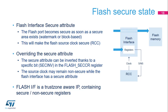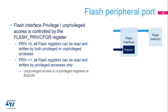The flash is secure when at least one secure area is defined, either by watermark-based option bytes or block-based security registers. This controls the source clock of the flash as secure. It is possible to override the flash security state using the SecInv bit in the FLASH_SECCR register. The flash interface is a TrustZone-aware IP containing both secure and non-secure registers. Flash registers can be read and written by privileged and unprivileged accesses depending on the PrivBit in FLASH_PRIVCFGR. When PrivBit is reset, all flash registers can be accessed by both privileged or unprivileged accesses. When PrivBit is set, all flash registers can be read and written by privileged accesses only; unprivileged access is read as 0, write ignored.